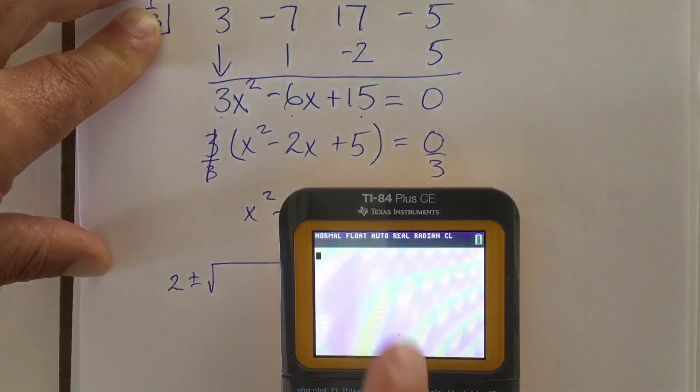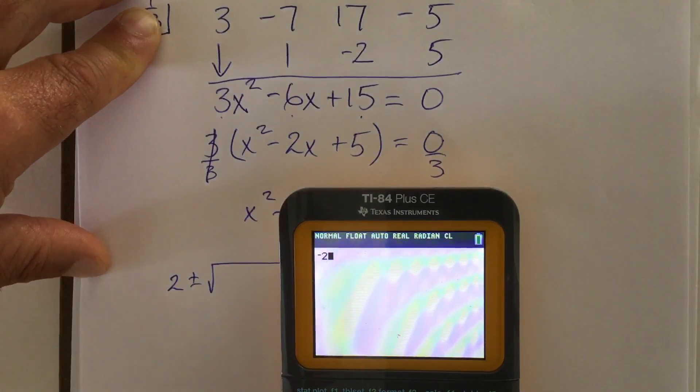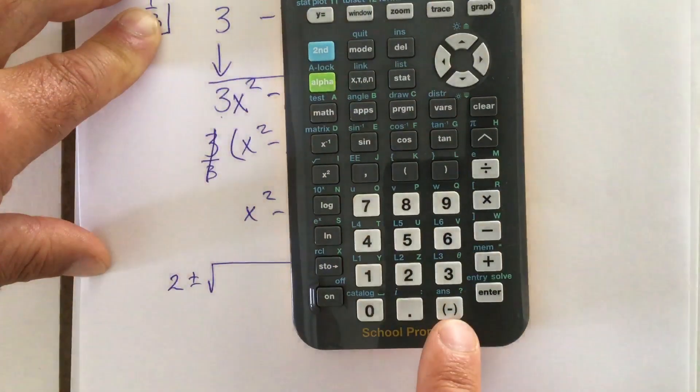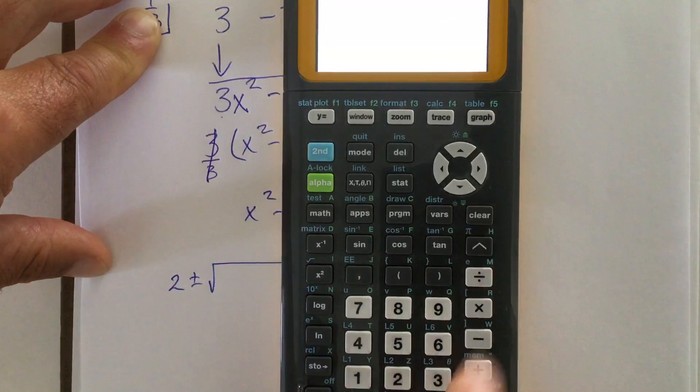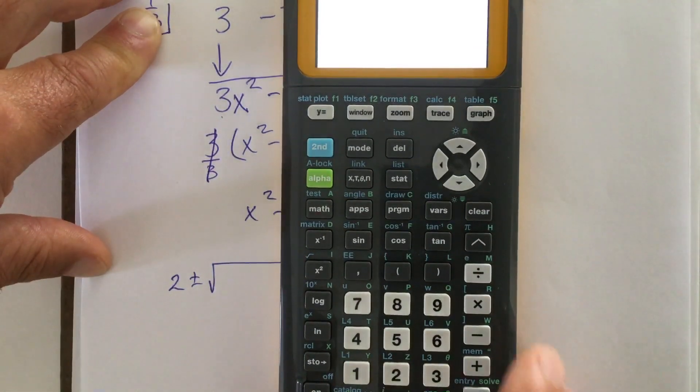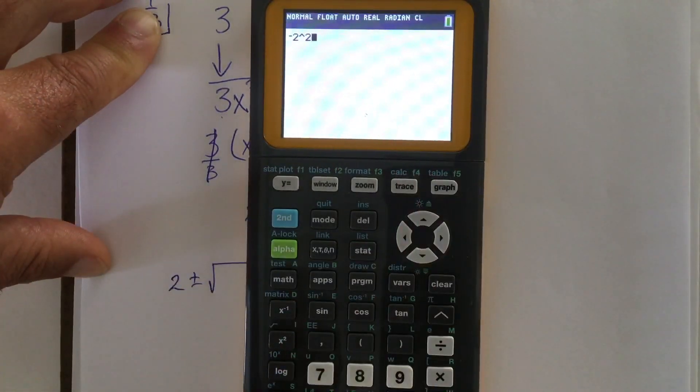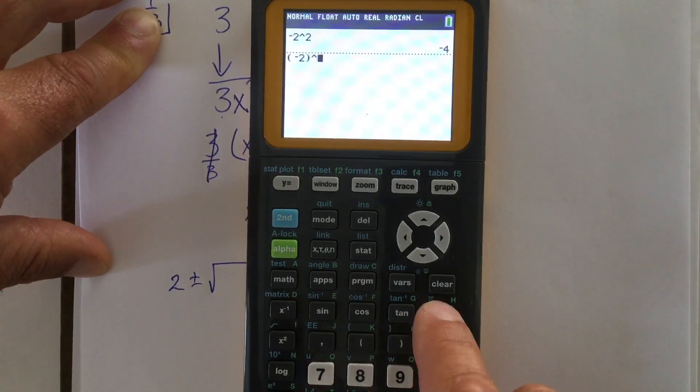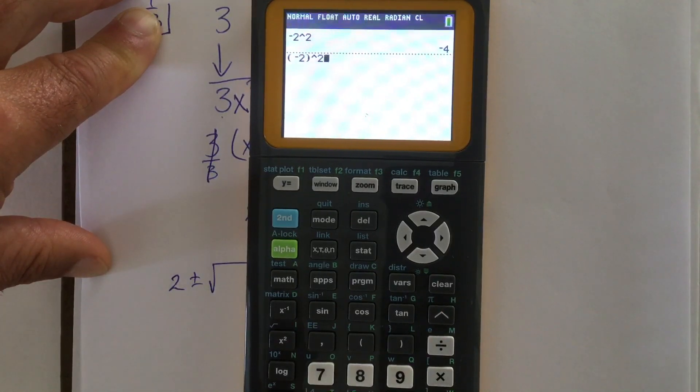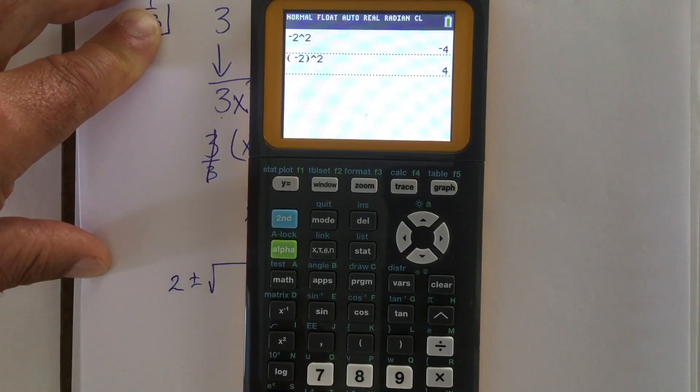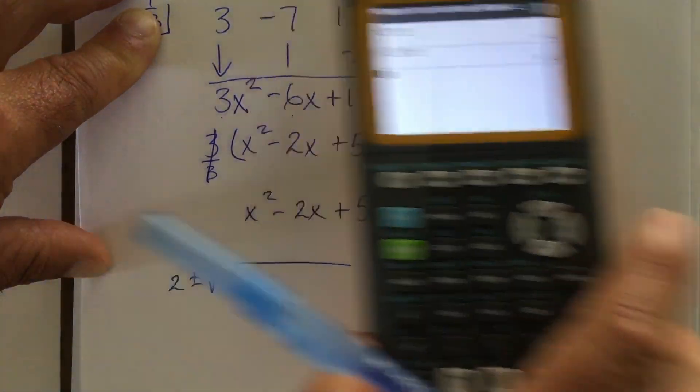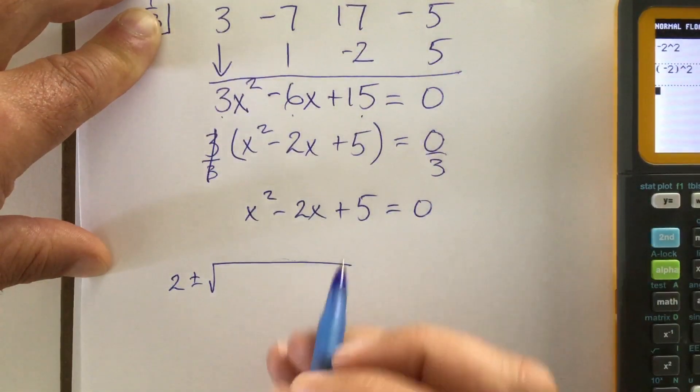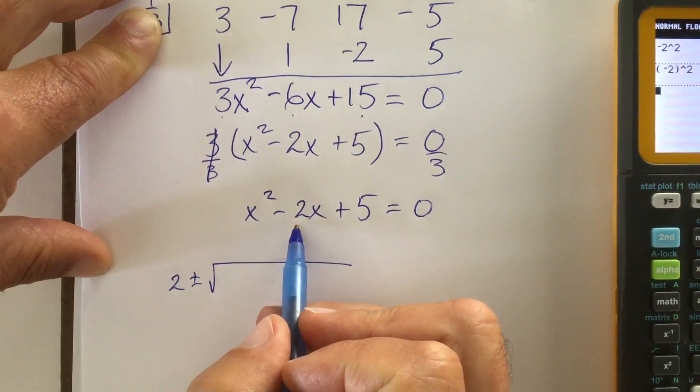On your calculator, I'm going to quit the screen here. Watch this. Negative 2. I just entered in negative 2 to the power of 2. It's going to tell me the answer is negative 4. And I know that's not true. When you are going to take a negative number to a power on these calculators, you've got to put it in parentheses or it'll get it wrong. Better yet, here's what I say. Better yet, do it in your head.